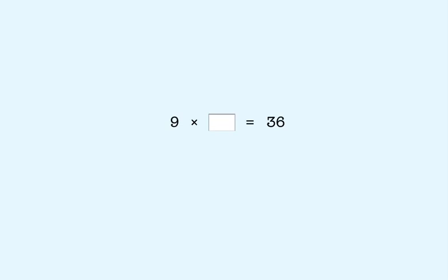9 times what number is 36? We know that the digit in the tens place of the product is 1 less than the missing factor that goes here. So the missing factor is 4. So 9 times 4 is 36.